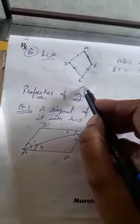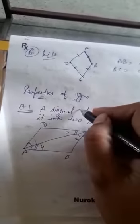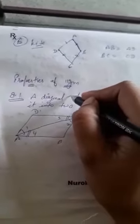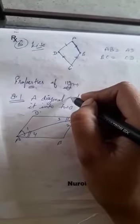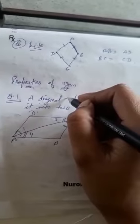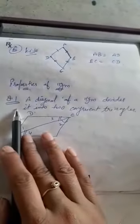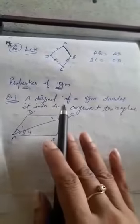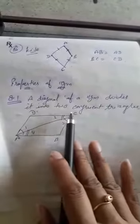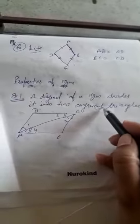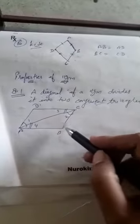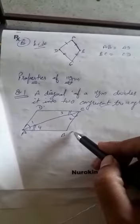Now, from all these six types we will start with the parallelogram. In our first exercise we will do questions and theorems related to properties of the parallelogram. The first property is: a diagonal of a parallelogram divides it into two congruent triangles, which we will prove here as a theorem.